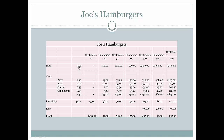For every hamburger that he sells for $5, he's got to incur these expenses of $2.50. So after he has taken into consideration his patty, buns, cheese, and condiments, he's going to have $2.50 left over from the sale. So when he has zero customers and he's not selling anything, he doesn't incur these costs. Costs that change according to the number he sells are called variable costs.